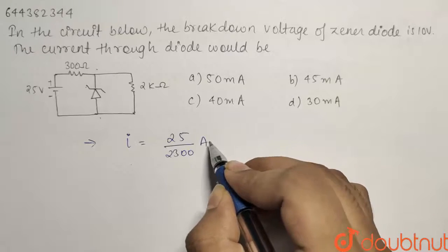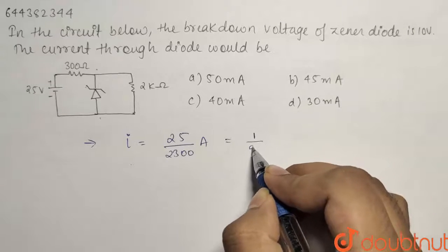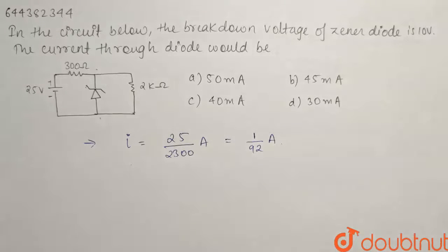So the current comes out to be equals to 25 by 2300 ampere or it can also be written as 1 by 92 ampere. So now we have found out the current.